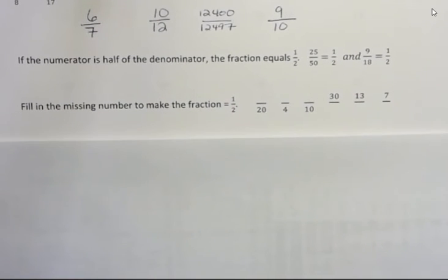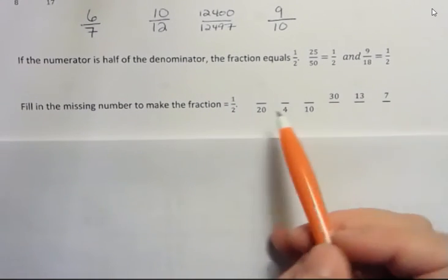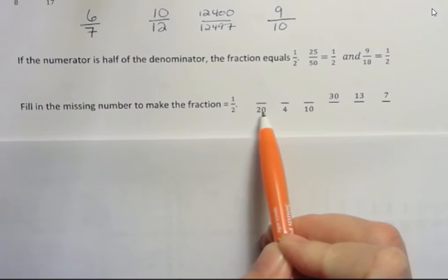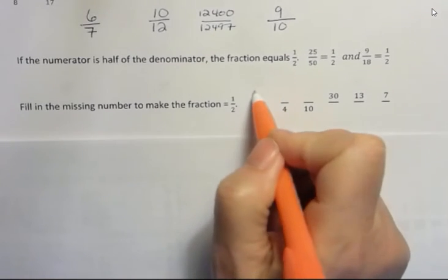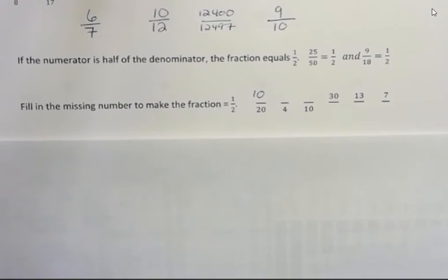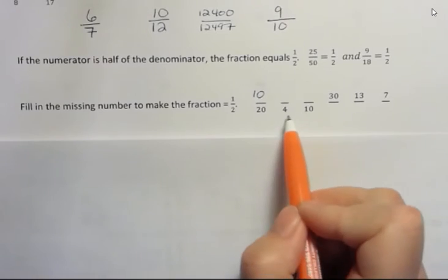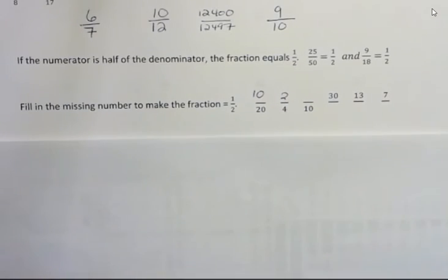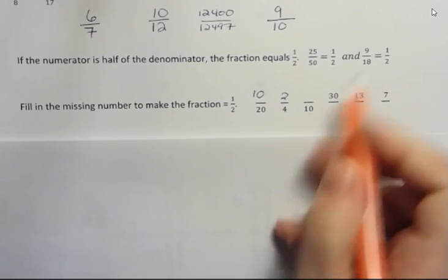And so fill in the missing numbers to make the fraction equal 1 half. Well, if I have 20 as a denominator, half of 20 is 10. So that would make that 1 half. You might want to try these. Pause the video and try them and then come back. Half of 4 is 2. Half of 10 is 5.